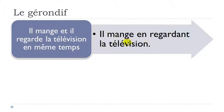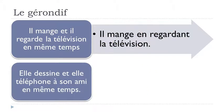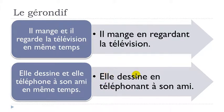The second example: ELLE DESSINE ET ELLE TÉLÉPHONE À SON AMI EN MÊME TEMPS — she draws and she phones her friend at the same time. Applying the same process, we keep ELLE DESSINE, transform TÉLÉPHONE into the participe présent TÉLÉPHONANT, add the preposition EN before it, and continue the sentence. The result is: ELLE DESSINE EN TÉLÉPHONANT À SON AMI.